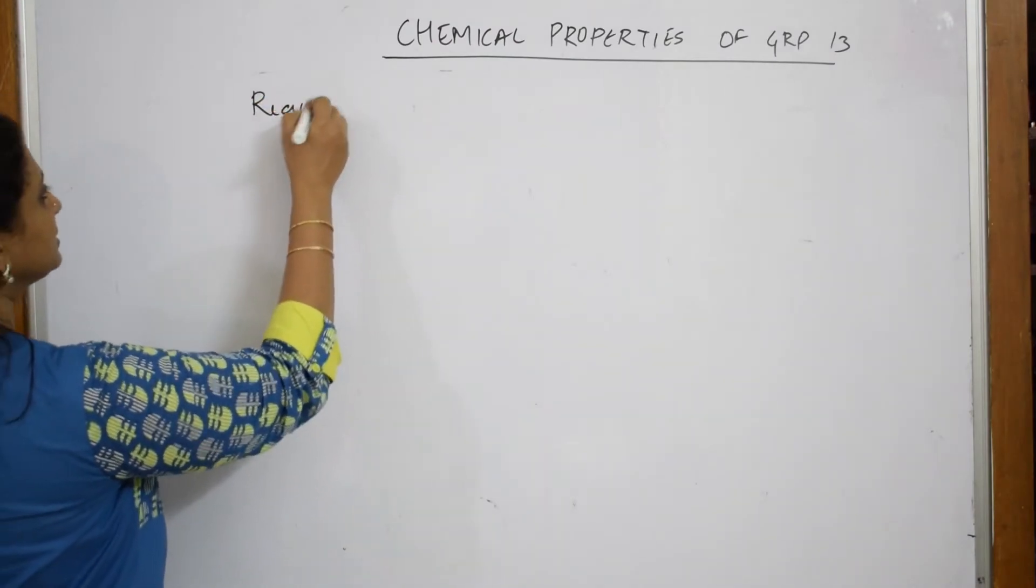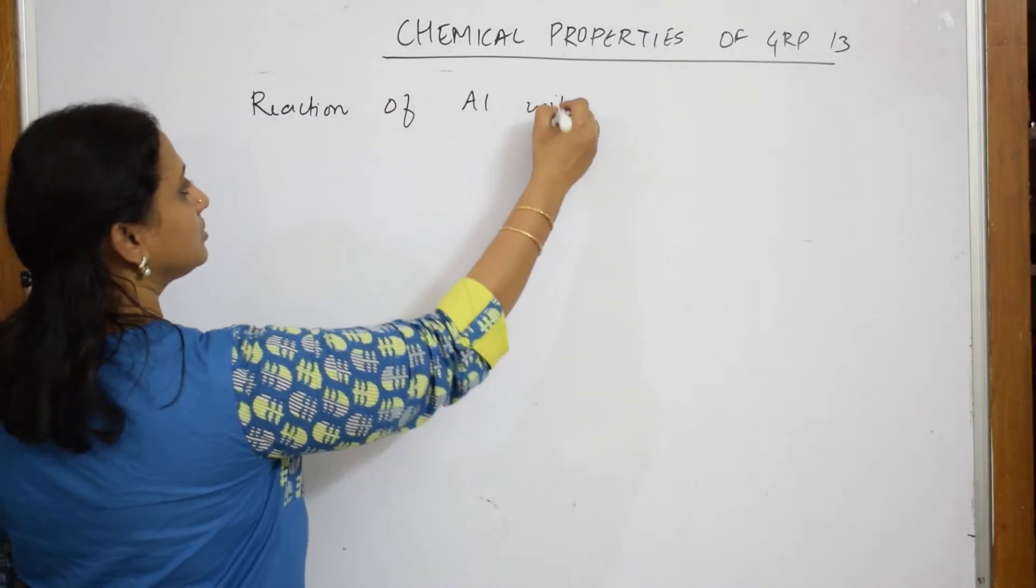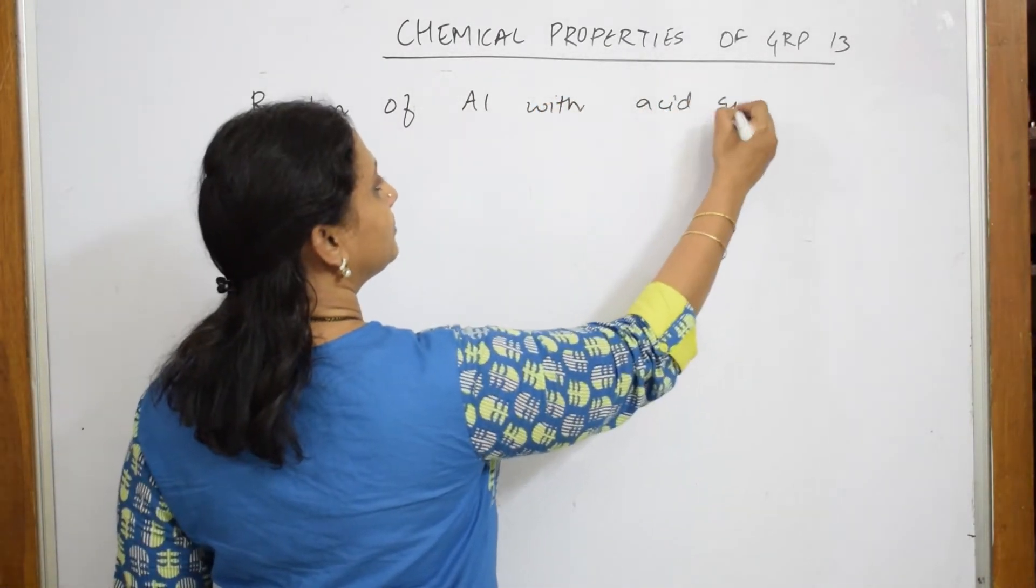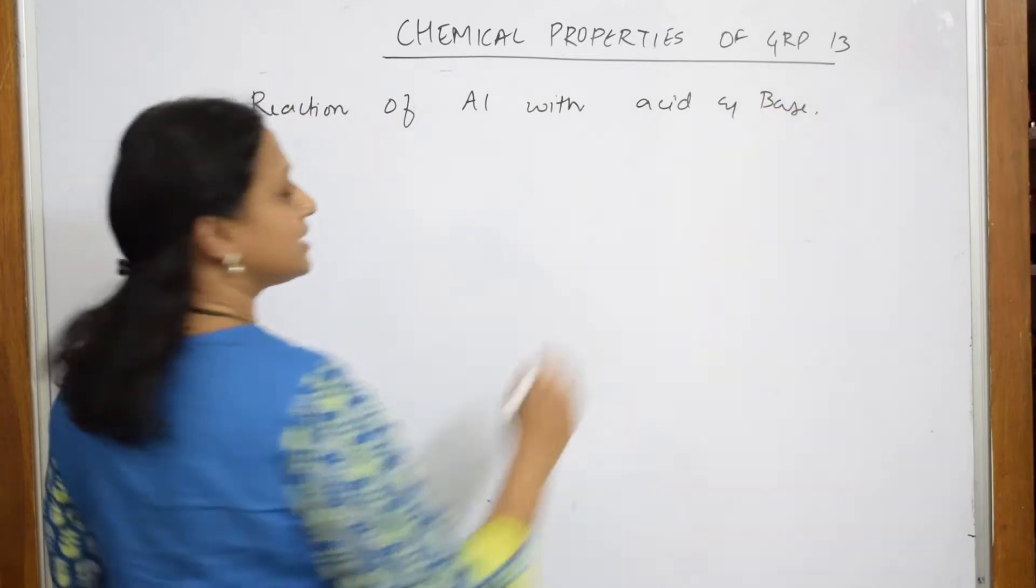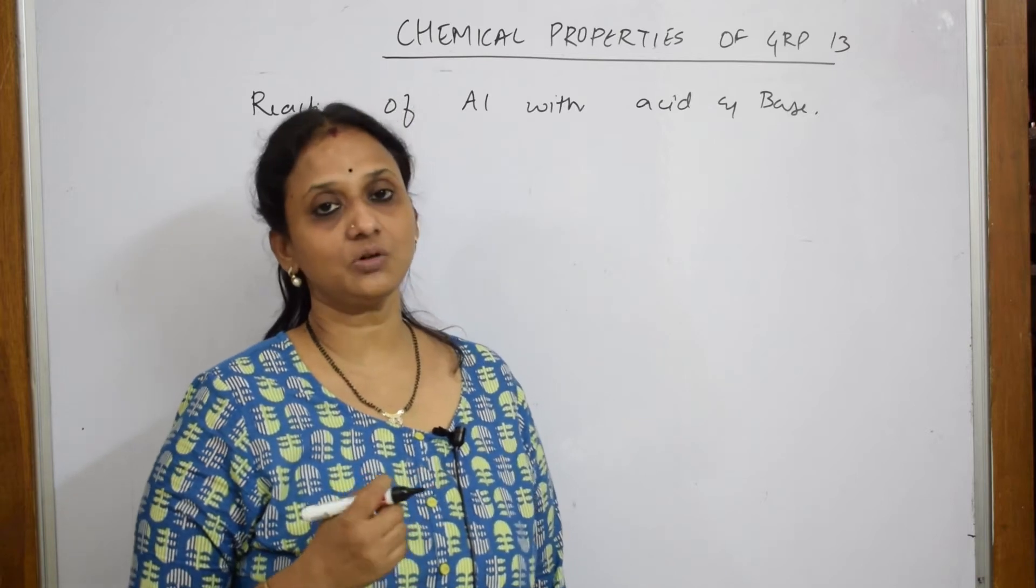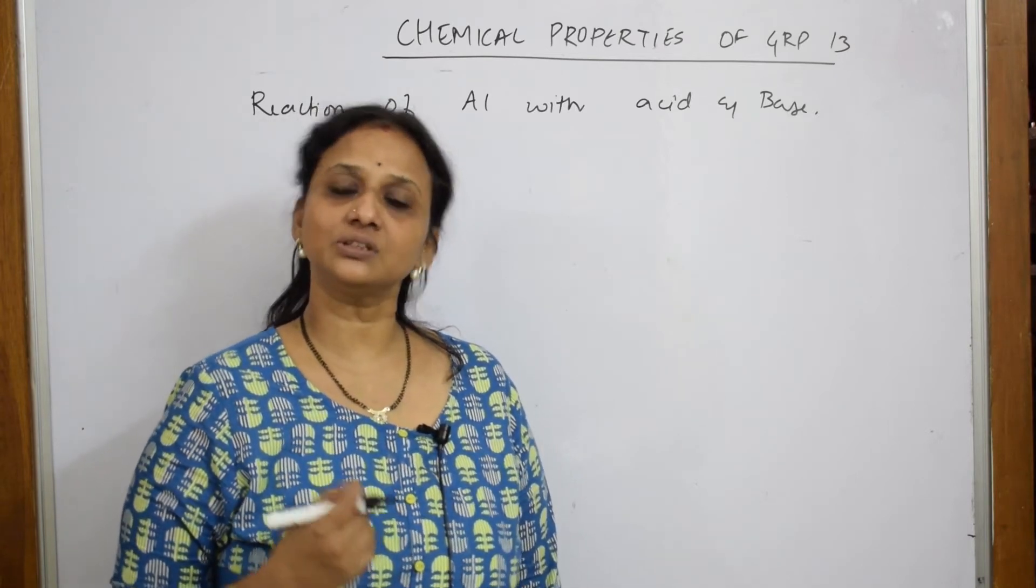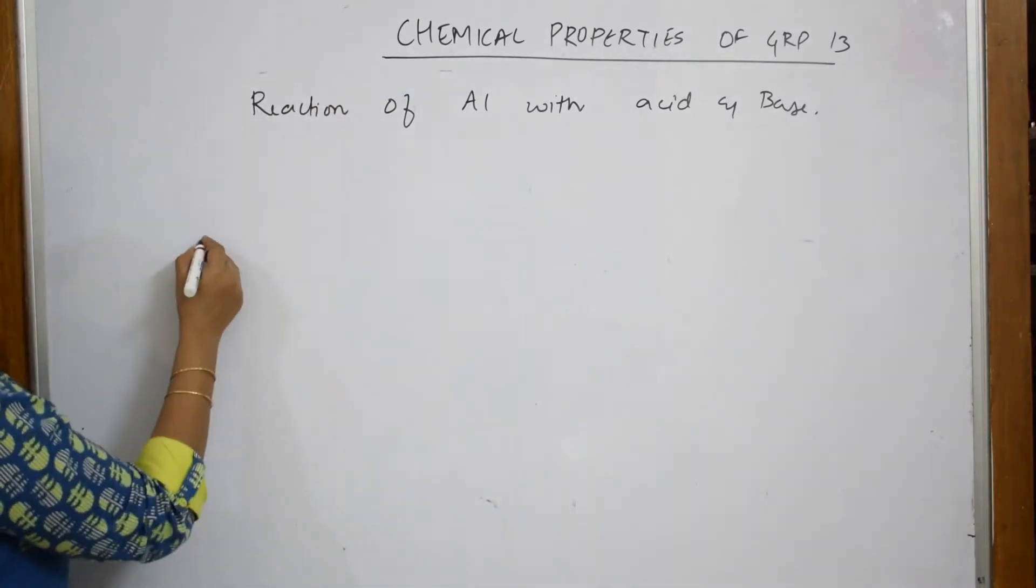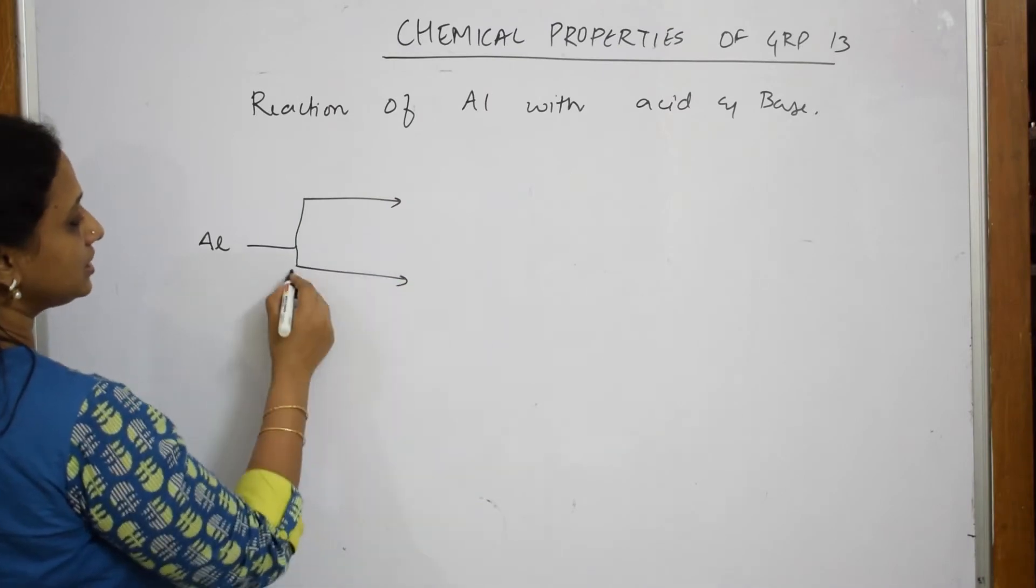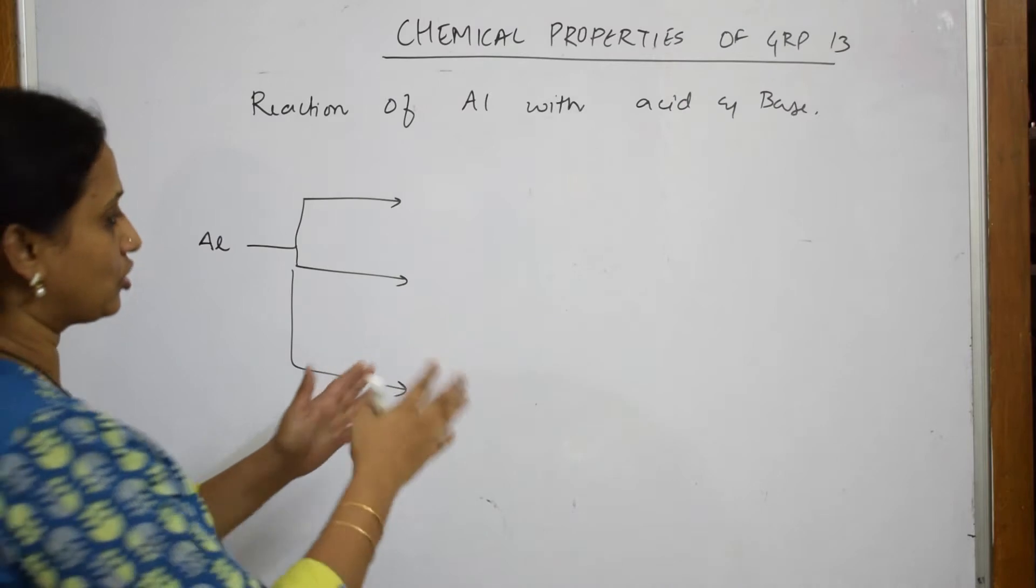Why am I taking this reaction? We have already told, aluminum is an amphoteric oxide. Amphoteric means it is going to react with an acid and it is also going to react with a base. Let us do with all the three things at a stretch so that you will get the whole concept together.